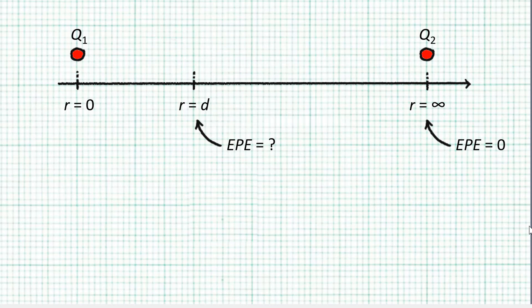To answer that, we just have to figure out the amount of work required to bring Q2 from r equals infinity to r equals d.